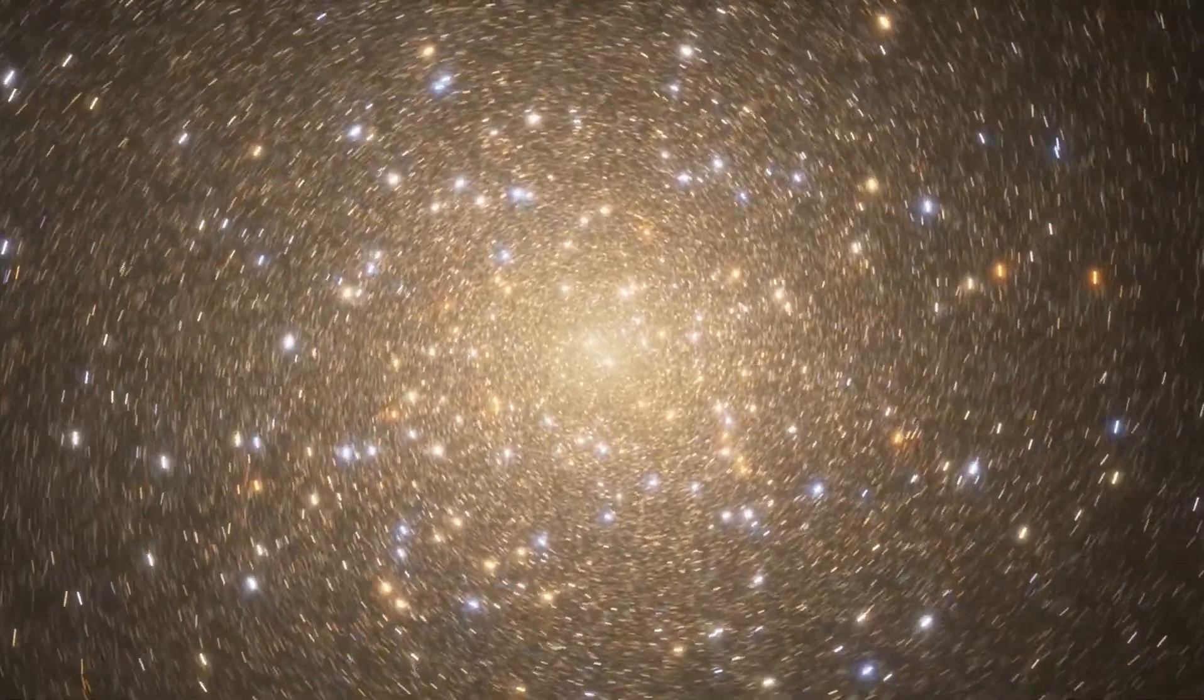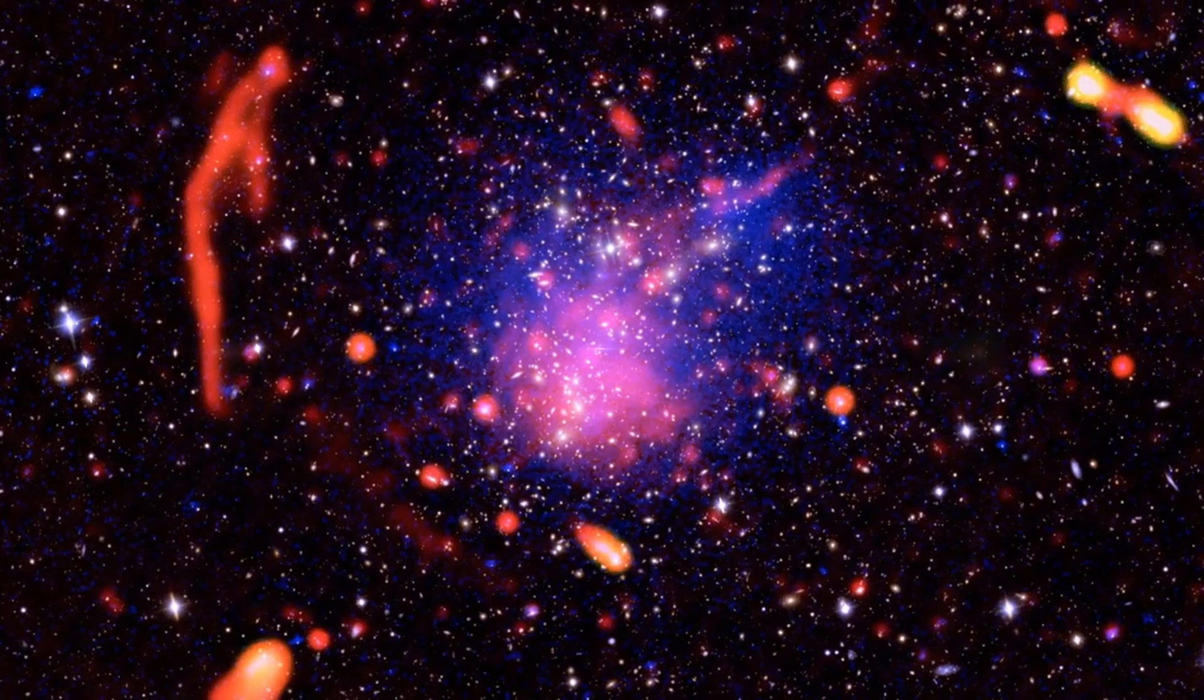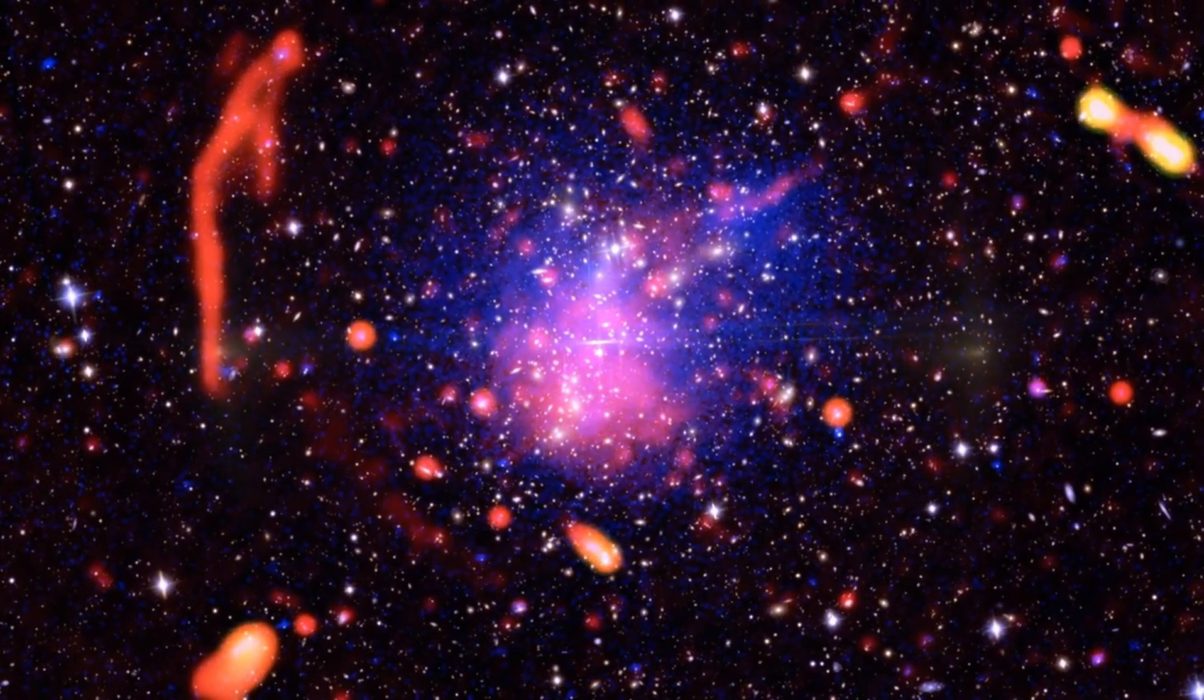The data sent by Voyager 1 are critical because the probe is now in a part of space where the sun's influence is weak, and it's telling us about things like cosmic rays and magnetic fields in a place we've never been able to study directly before.